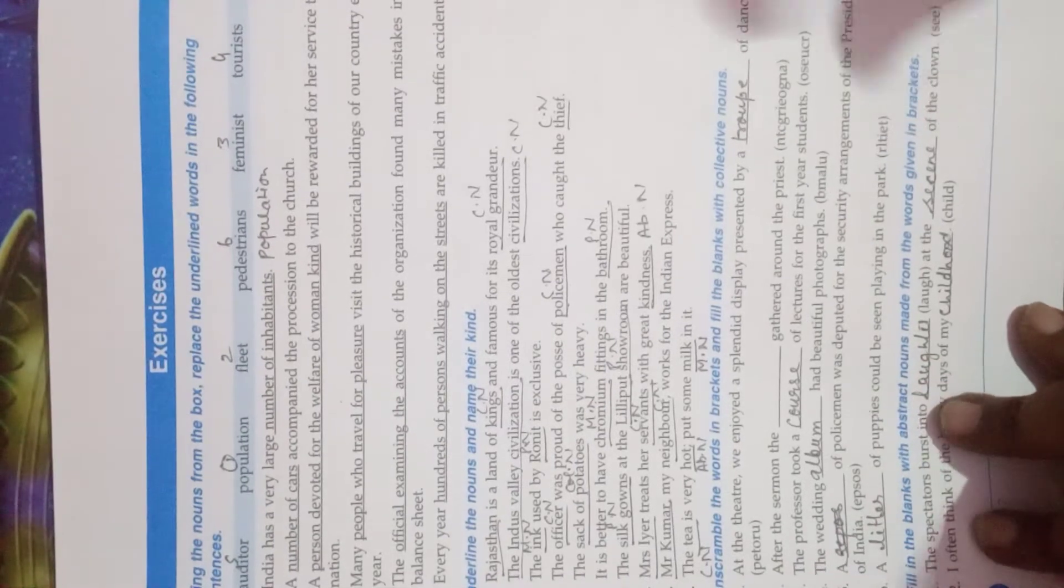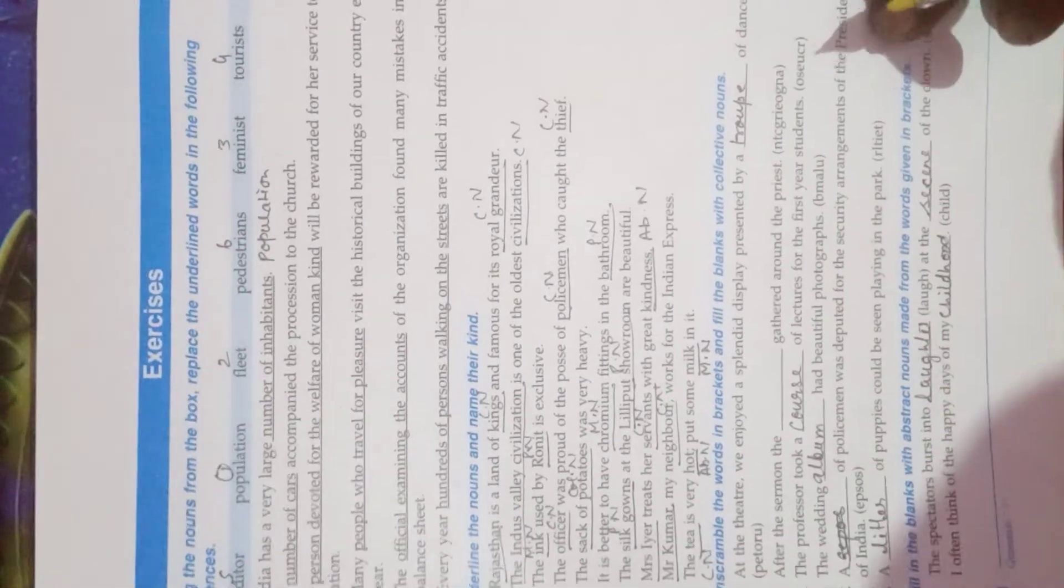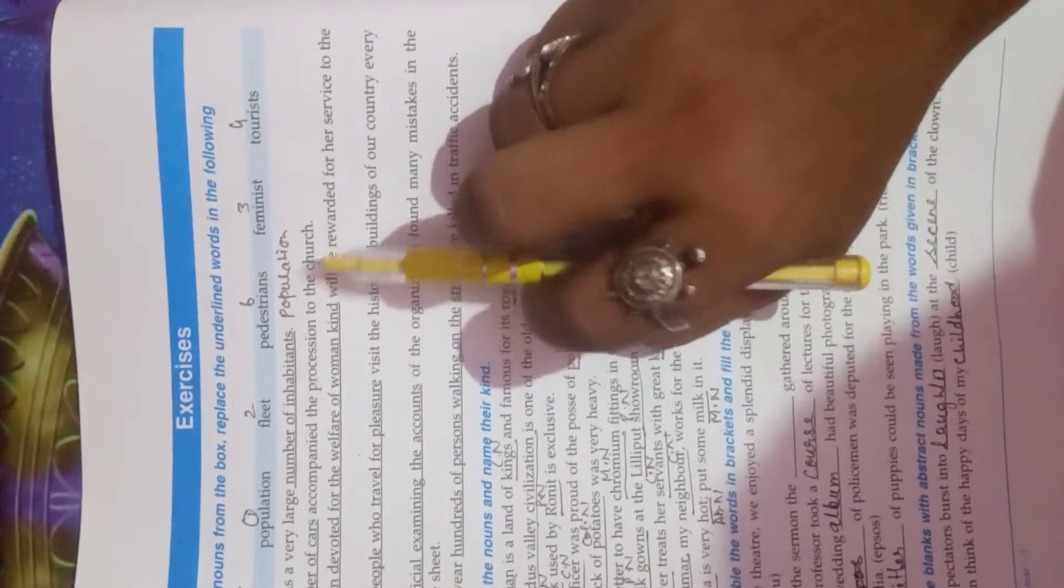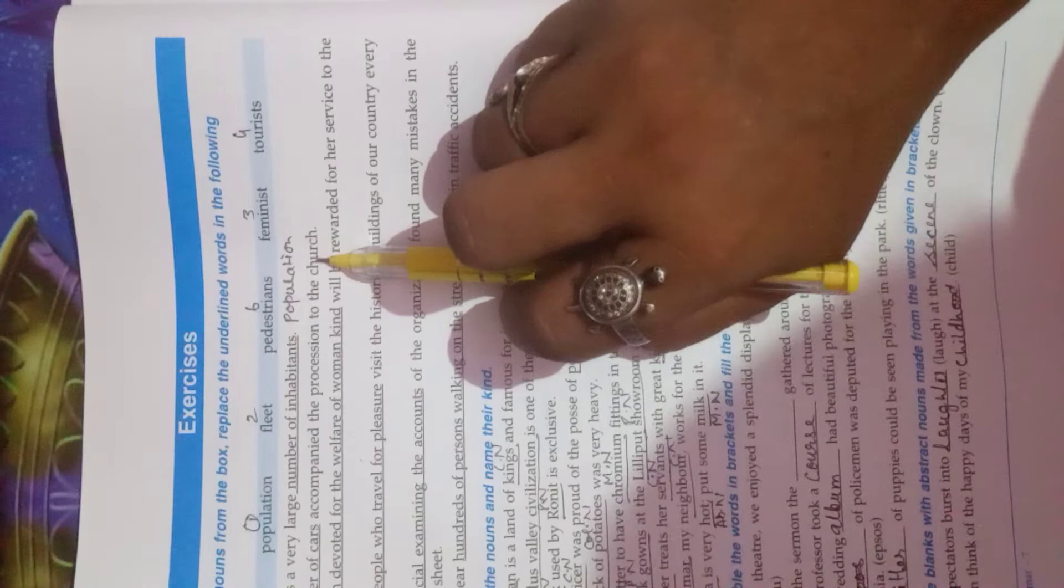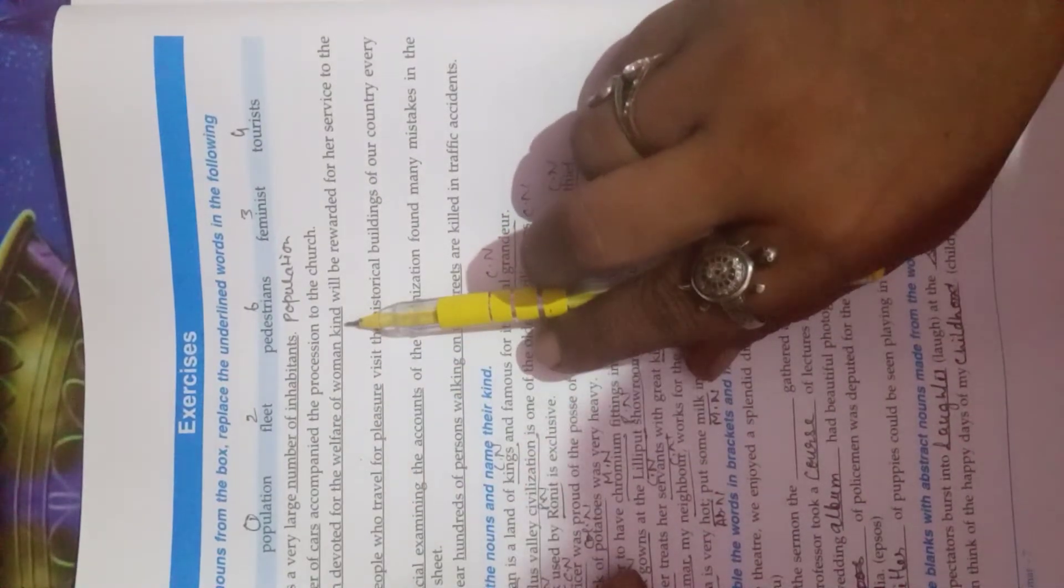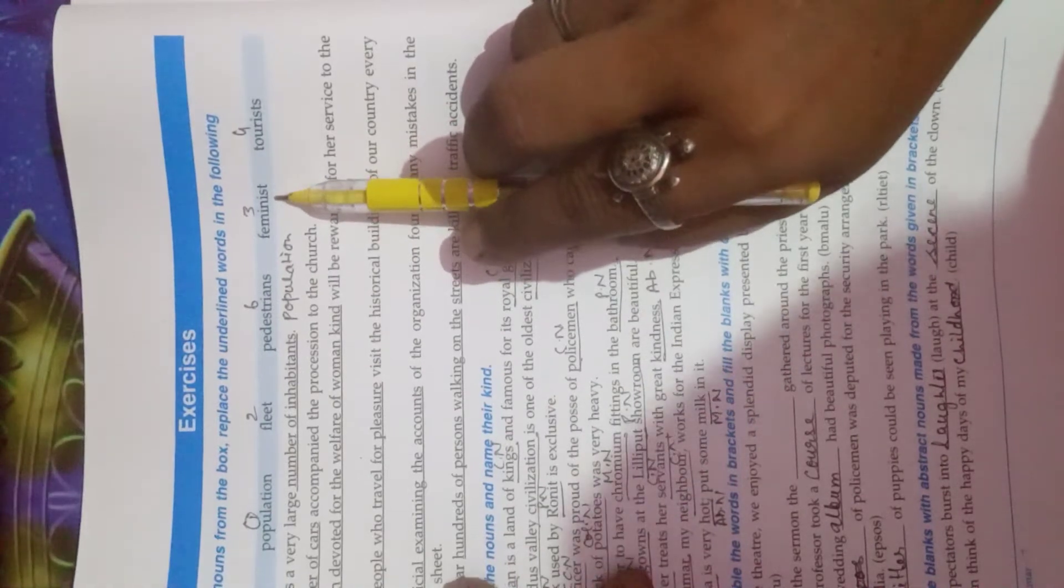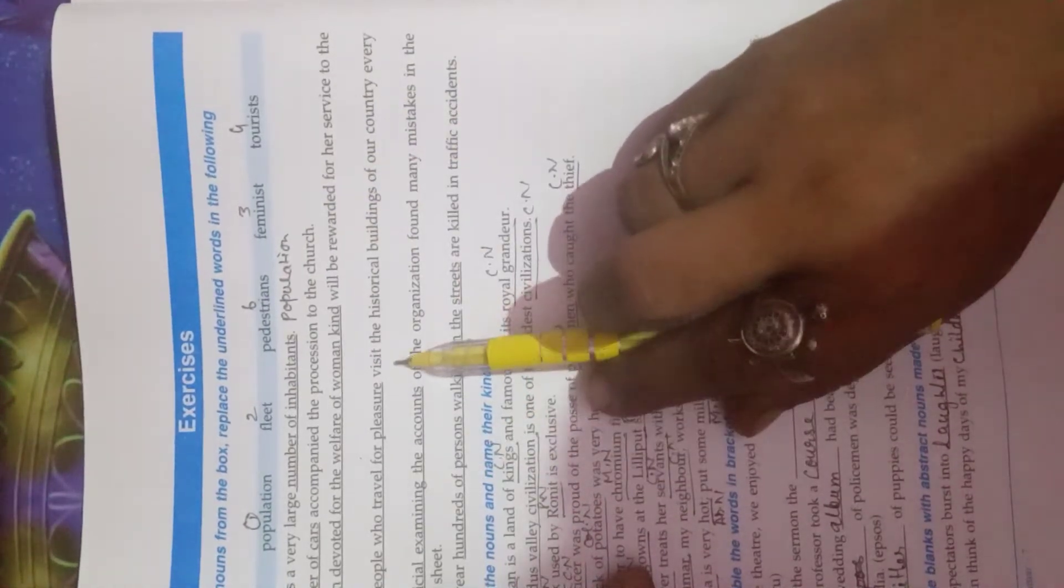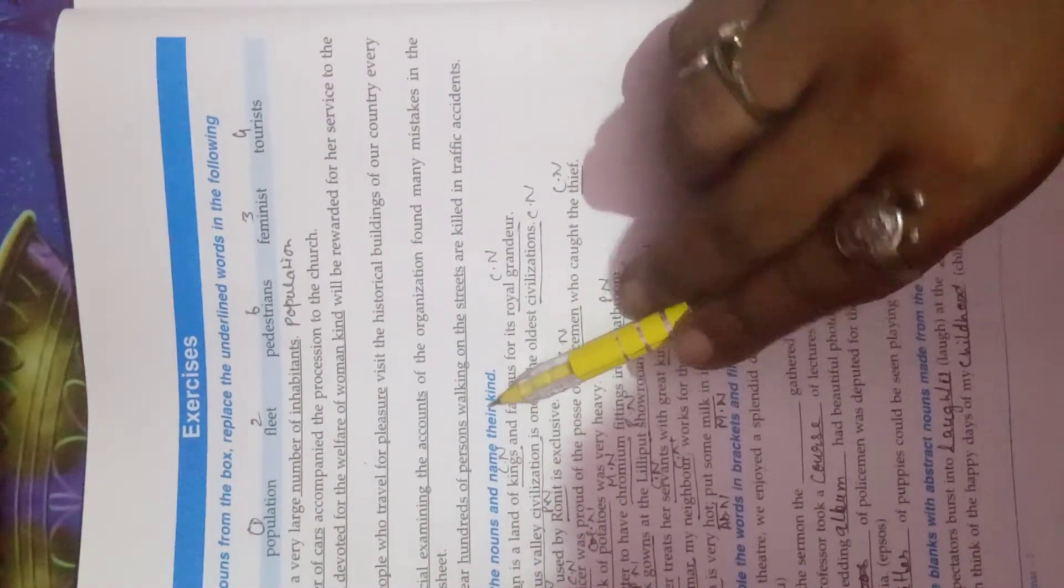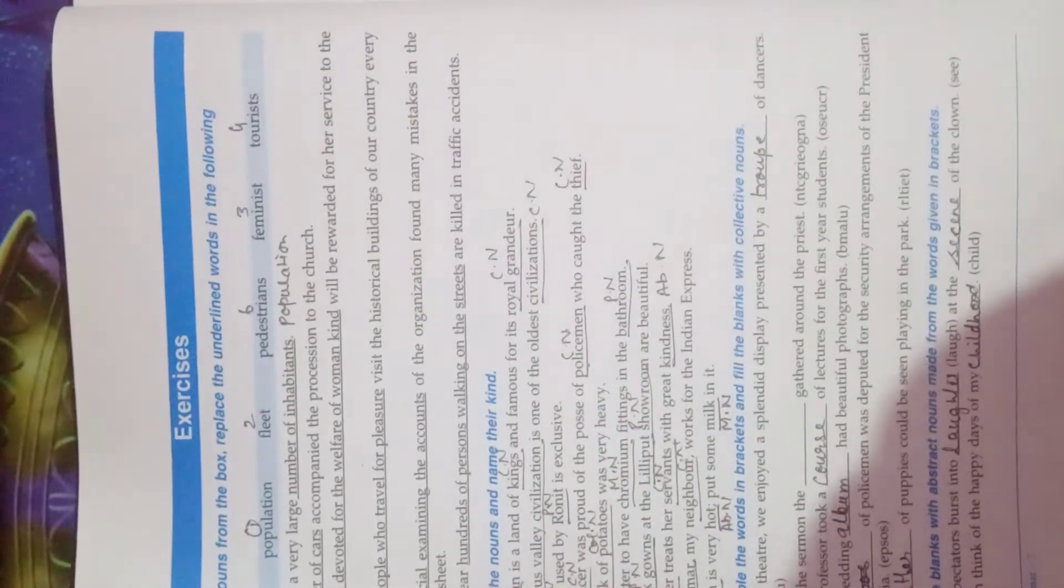Exercise number 1 on page number 22. The answer of the first is population. Second is fleet. The third answer is feminist. The fourth answer is tourist. The fifth answer is auditor and the sixth answer is pedestrian. I think you all got it.